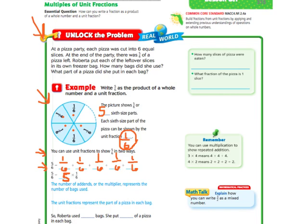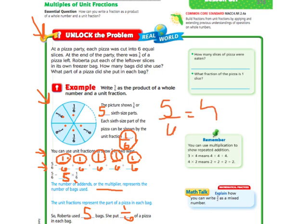The number of add-ins — here we have 5 add-ins, we're adding 5 of them. The multiplier represents the number of bags used. We had 5 bags used, and each of them were 1/6-size. So Roberta used 5 bags and put 1/6 of a pizza in each bag. That's basically the lesson — they want you to understand that 5/6 is equal to 5 times 1/6.